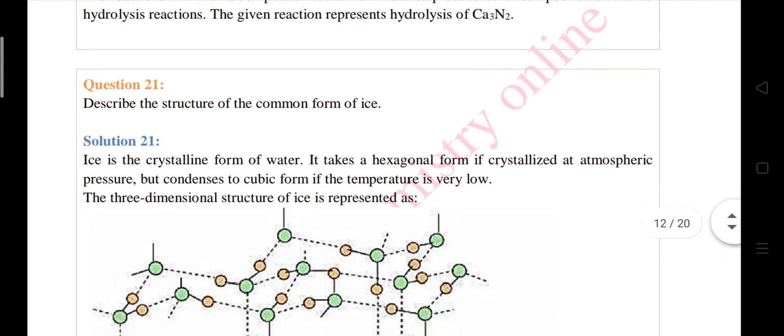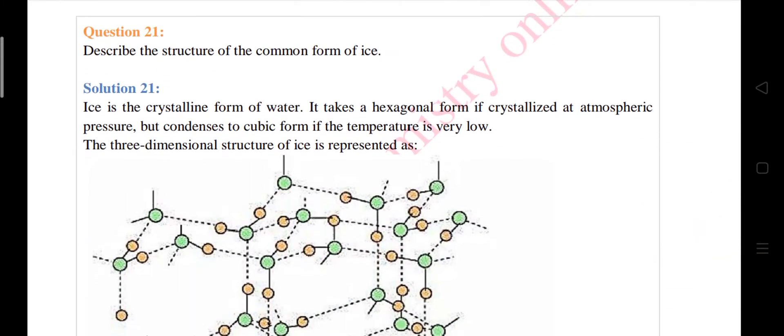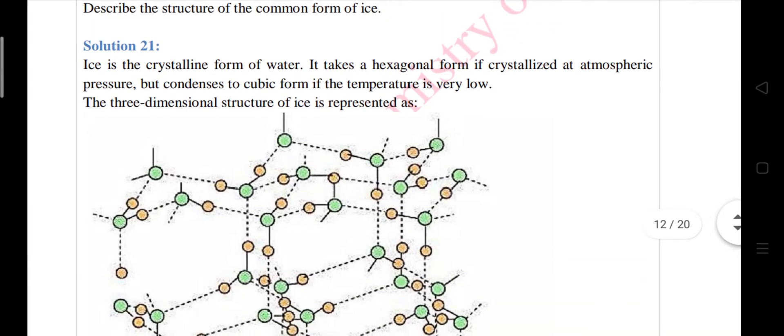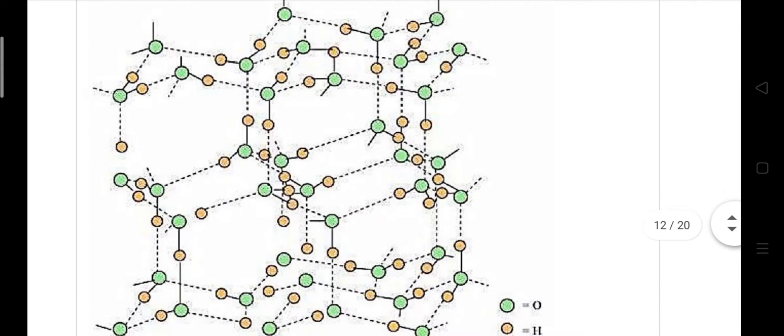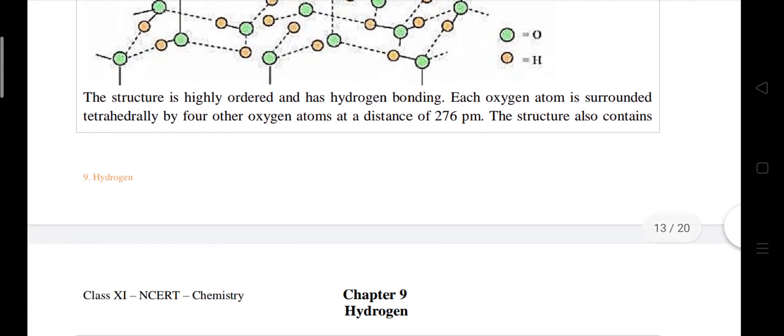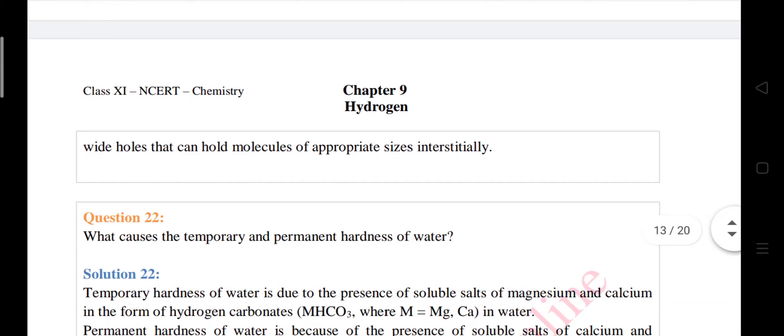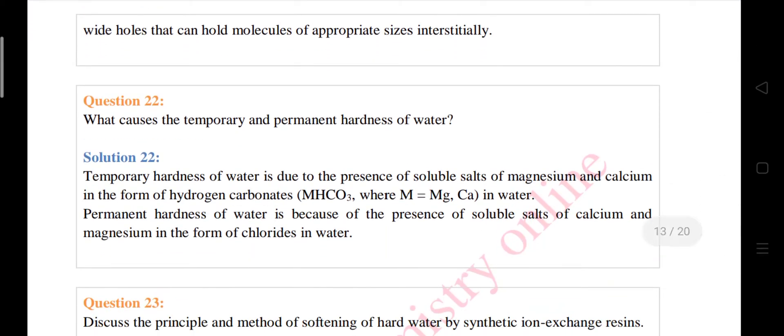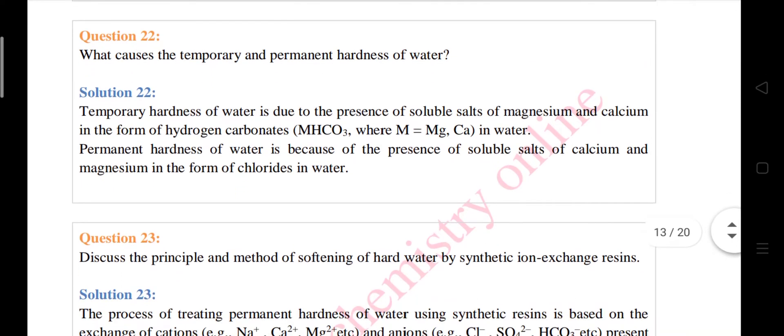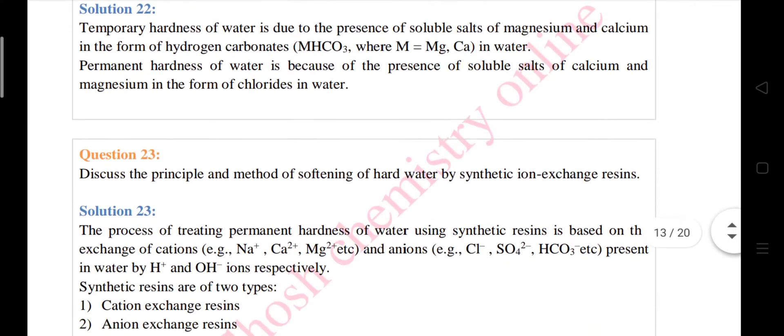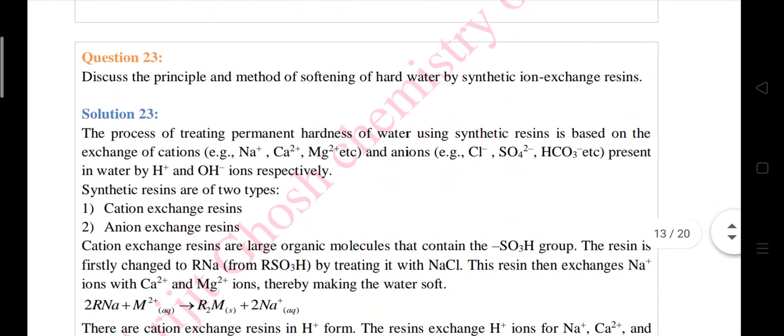Next is question number 21: Describe the structures of the common form of ice. The hydrogen bonds you can see in the structure of ice. Next is question number 22: What causes the temporary and permanent hardness of water? These are very easy questions students, you can answer them. Next is question number 23.